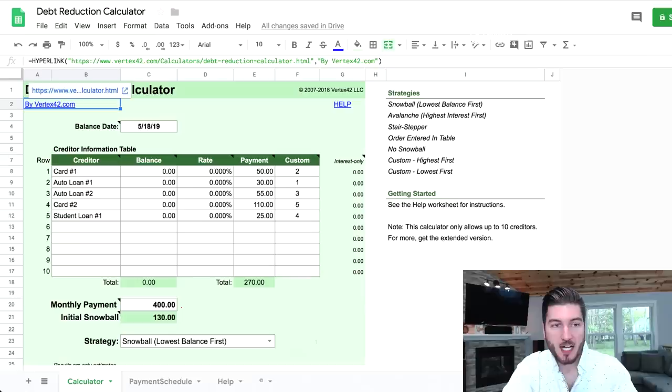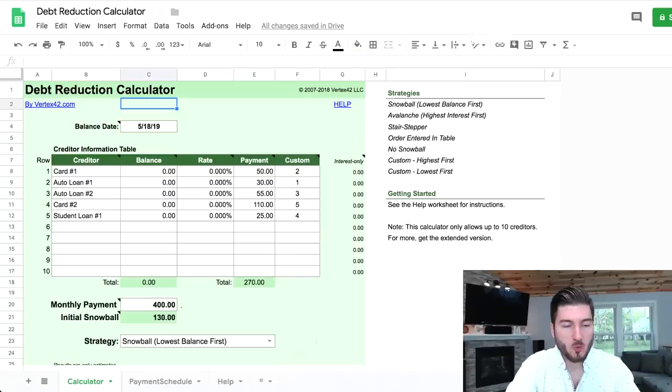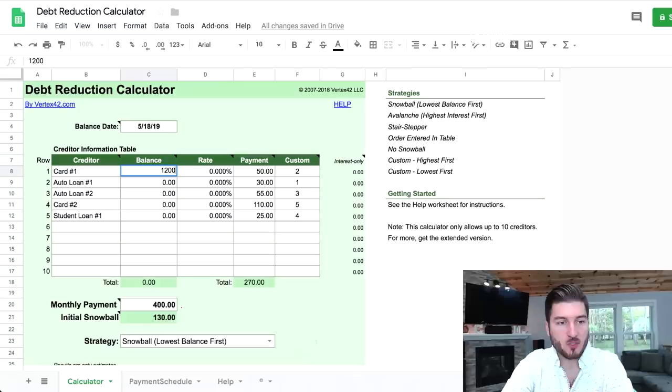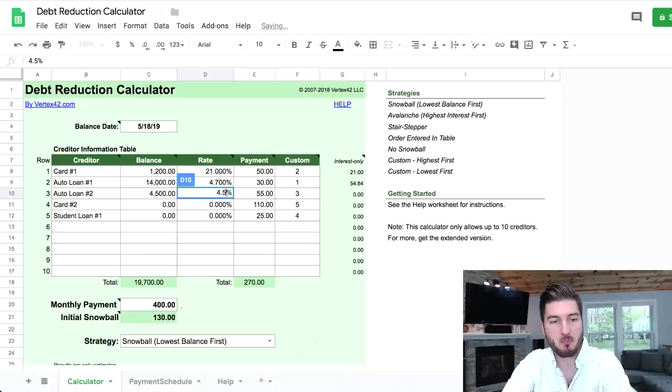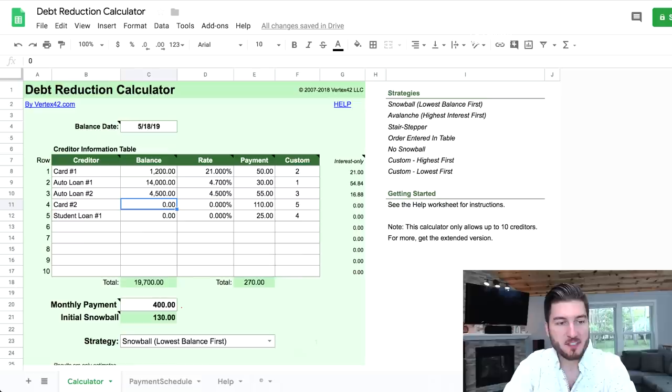You'll see that visualized very easily right here with this Excel spreadsheet. Big shout out to vertex42.com, these are the people that created this spreadsheet and I will link them down below. Let's create a hypothetical situation. This credit card is $1,200 at 21% interest rate. We have an auto loan of about $14,000 at 4.7%. We have a second auto loan at $2,000 and 4.5%. We have a second credit card at $2,000 with 18% interest, and student loans of $23,000 at 6.5% interest rate.